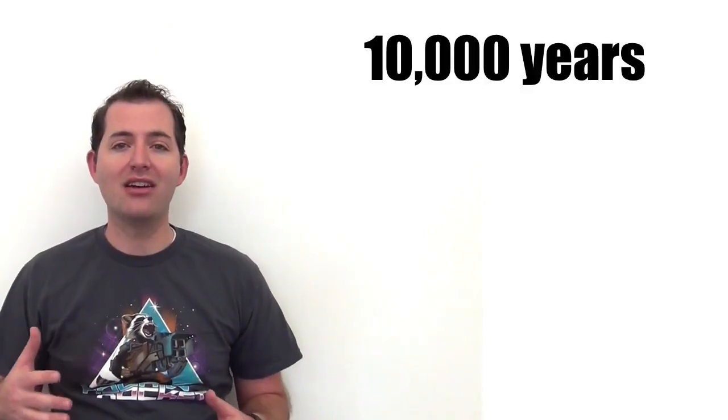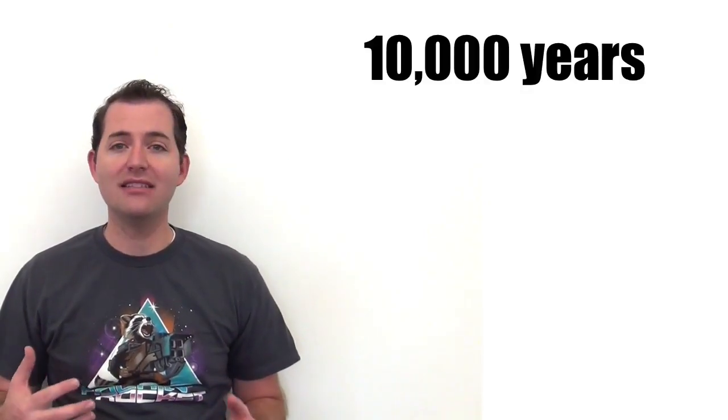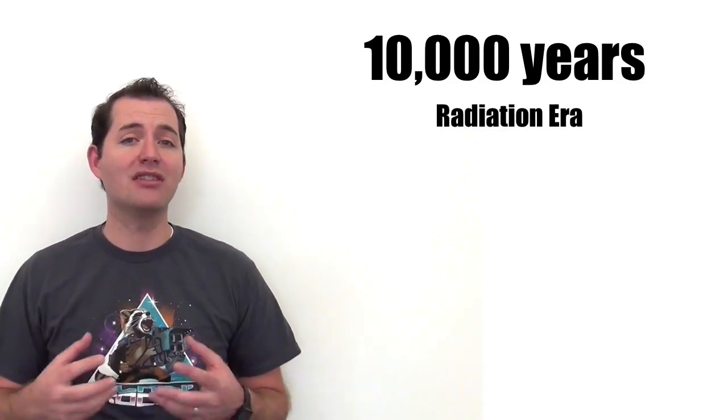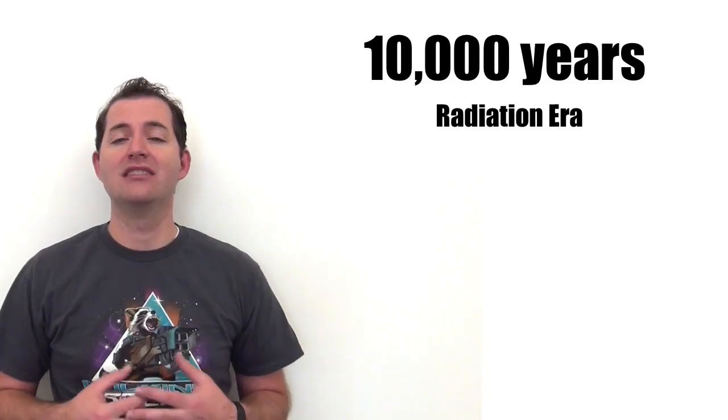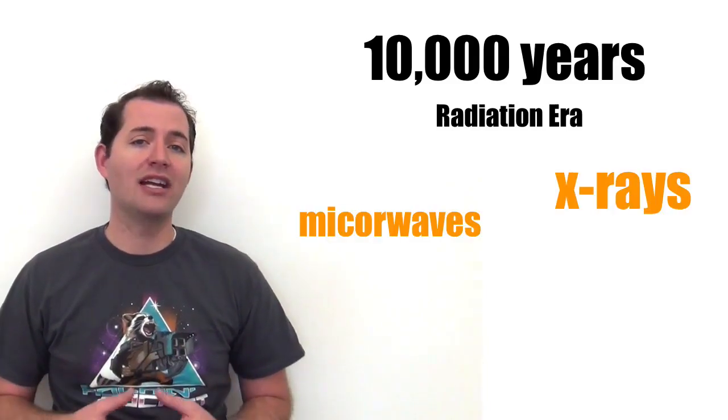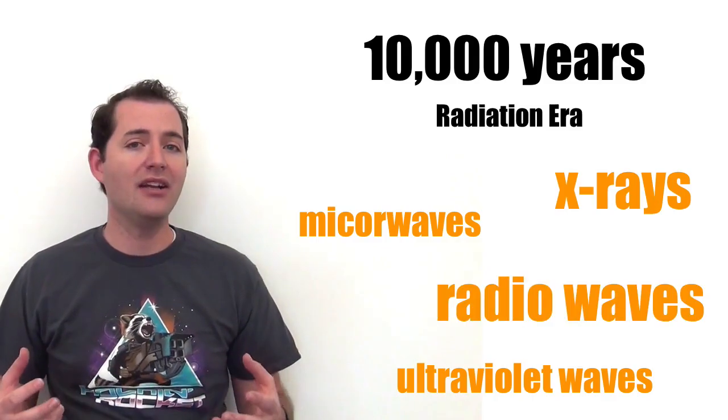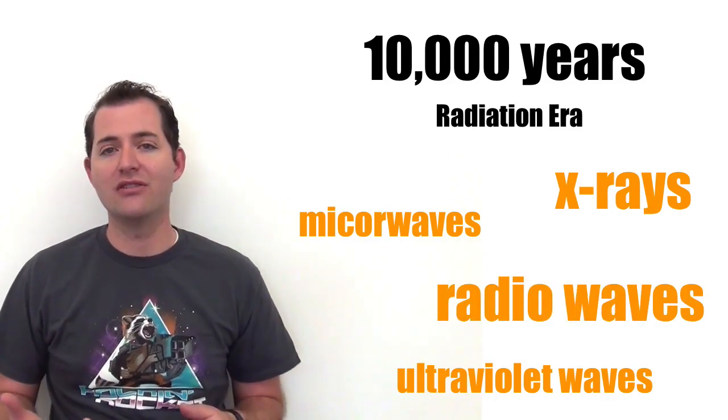We're now going to jump to about 10,000 years after the Big Bang, and this is known as the radiation era. This is because at this time there was a lot of different types of radiation such as microwaves, x-rays, or ultraviolet waves, and all of these forms of radiation including radio waves were all over in the universe.